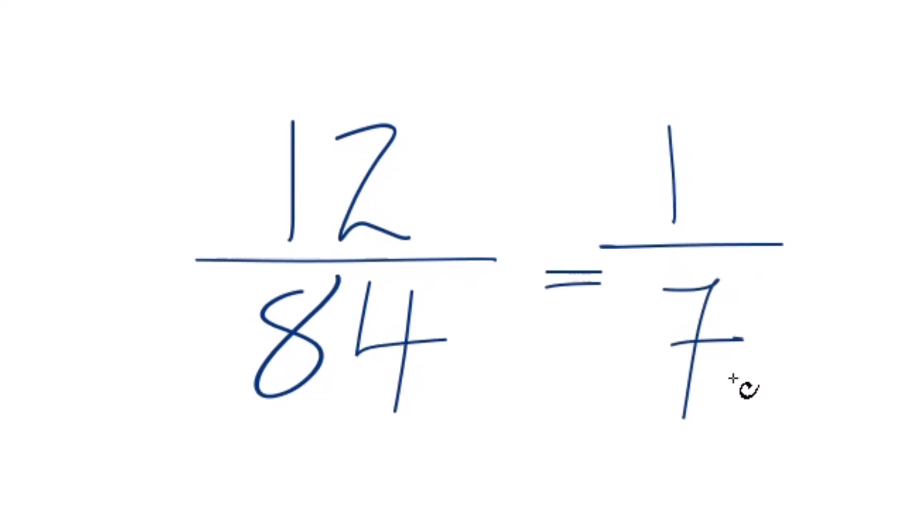Can't reduce this any further. If you don't know that, though, here's how you could do it. Since these are both even numbers, let's just divide the numerator and denominator by 2. 12 divided by 2 is 6. 84 divided by 2 is 42.